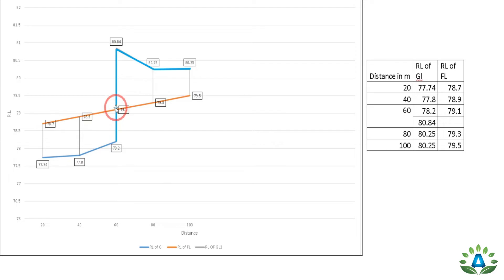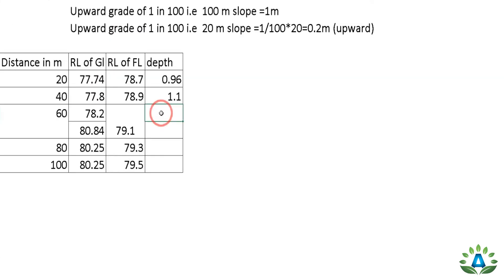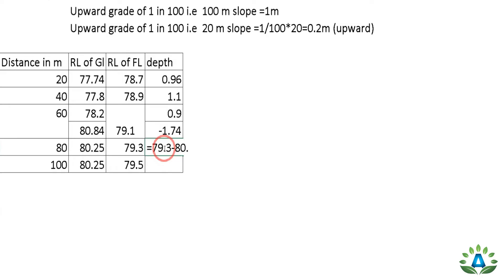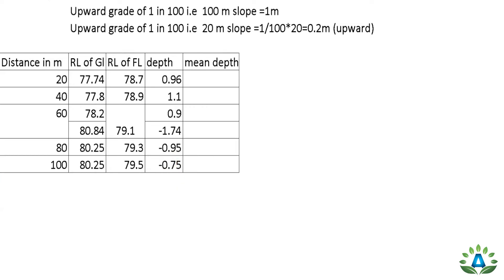At the 60-meter chainage, we get two depths because there are two ground levels. Formation level 79.1 minus ground level 78.2 = +0.9 meters (fill), and 79.1 minus 80.84 = -1.74 meters (cut). At 80-meter chainage: formation level 79.3 minus ground level 80.25 = -0.95 meters (cut). At 100-meter chainage: 79.5 minus 80.25 = -0.75 meters (cut).